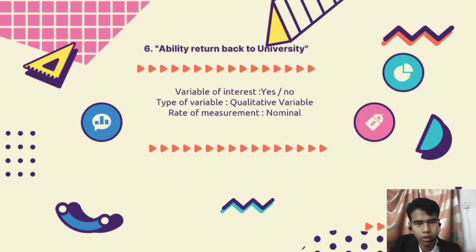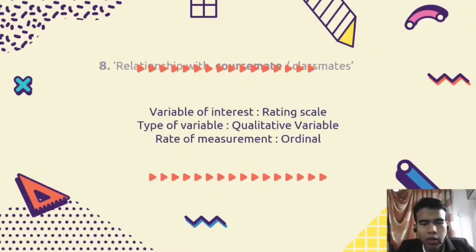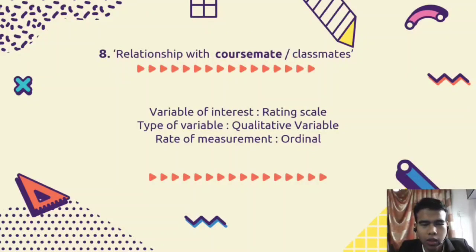I will continue with the other variables. Variable 6 is the ability to return back to university — we will find students' ability to return to university, and this is a nominal qualitative variable. Variable 7 is internet connection speed for online learning, where we will find out the speed of internet in kilobytes per second. This is a ratio scale under quantitative variable. Variable 8 is relationship with classmates — we will collect the rating scale to find out the students' relationship with other classmates. This is ordinal, a qualitative variable.